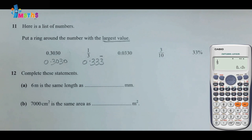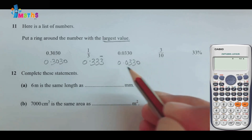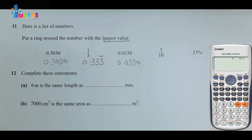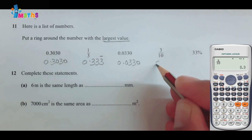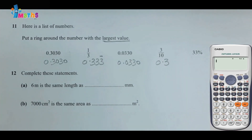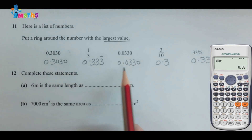We note the recurring symbol for 0.333... The next number, 0.033, is already given as a decimal. Next, three over ten — using the calculator, three divided by ten gives 0.3. And thirty-three percent will be equal to 0.33. Now we have everything in decimal format so we can compare easily.